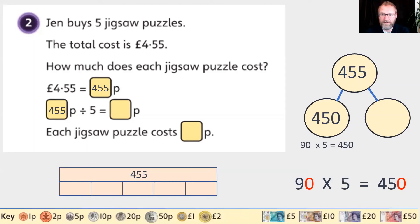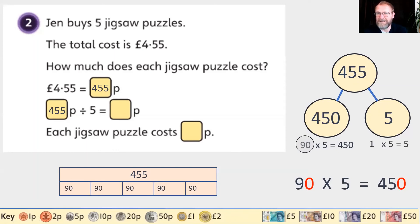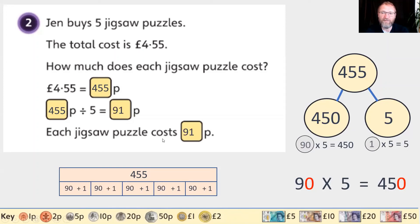Five lots of 90 is 450, but our total is 455. What's left over is five, and five divided into five equal parts is one. So we can see that we made 91 - five groups of 91. Therefore 455 pence divided by five is 91 pence. Each jigsaw puzzle costs 91 pence.